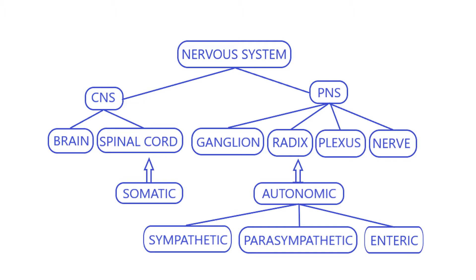Anatomically, the nervous system is divided into central and peripheral. The CNS includes the brain and spinal cord respectively. The PNS consists of the ganglia and the nerves outside the CNS.